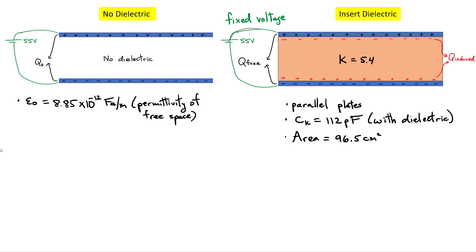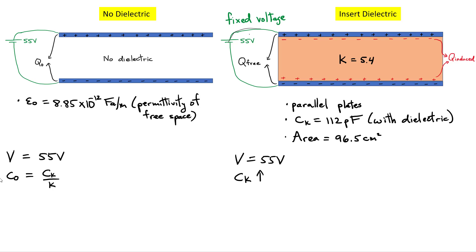Let's look at a couple quantities. The voltage, both without and with a dielectric, is 55 volts since the battery stays connected. The capacitance with the dielectric is CK, and without the dielectric I call it C0. The capacitance without the dielectric equals CK divided by the dielectric constant k — inserting the dielectric always increases capacitance. So C0 is 112 picofarads divided by 5.4, which gives 20.74 picofarads.